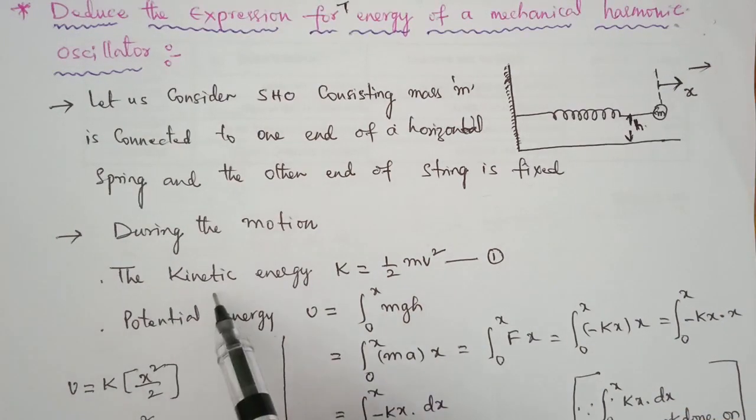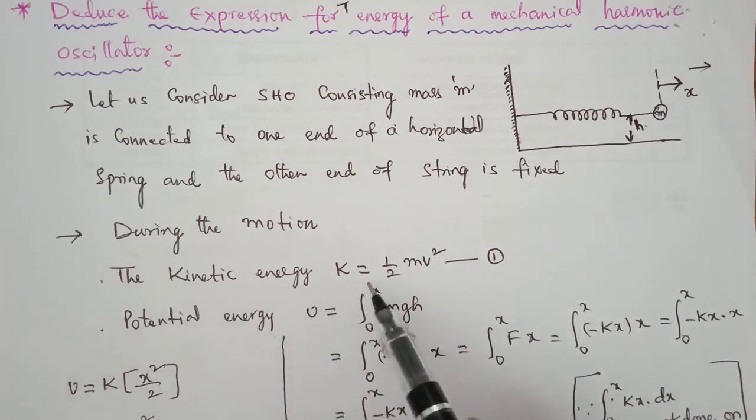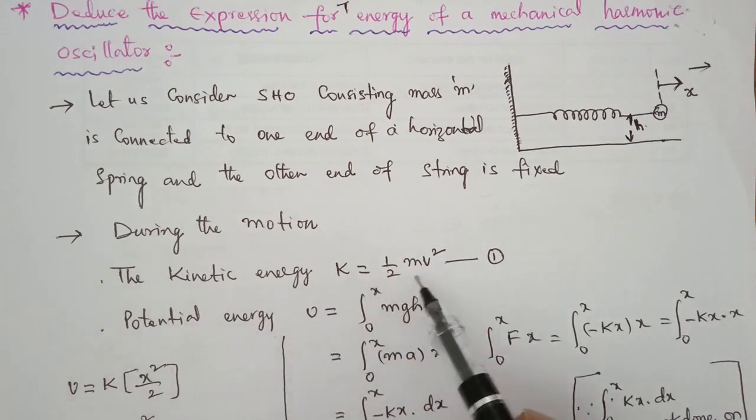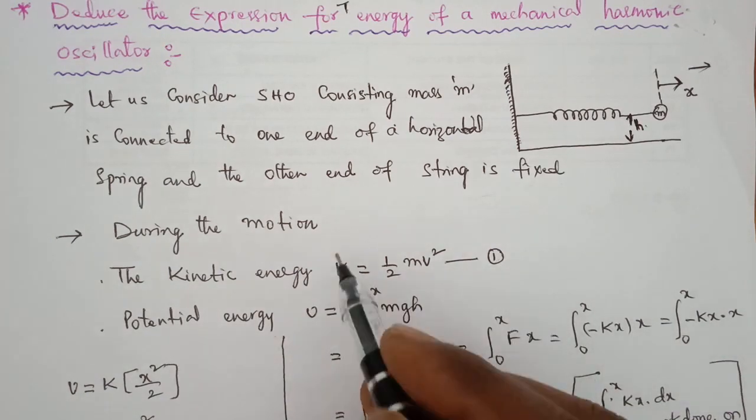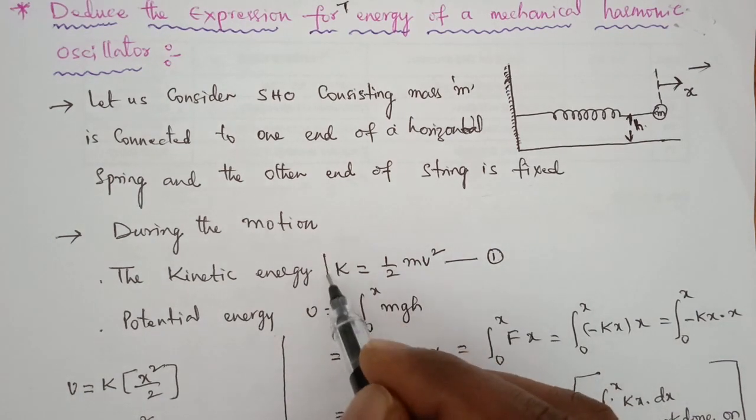During the motion, the kinetic energy K is equal to half mv squared. Let us consider this as equation 1.